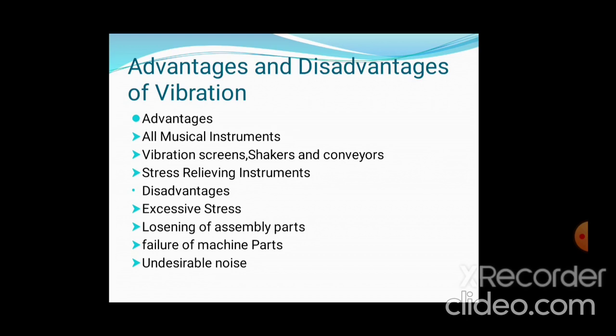The disadvantages of vibrations: First, excessive stress is developed. Second, loosening of assembly parts — when bolts are initially tightened, vibrations cause them to loosen. Third, failure of machine parts — excessive vibrations will cause failure of machine parts and create undesirable noise. That is why we aim to reduce vibrations. This is all about the introduction, or the fundamentals of vibrations.